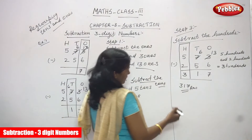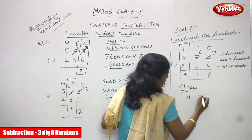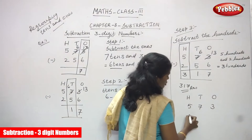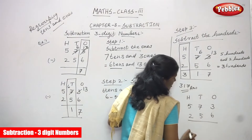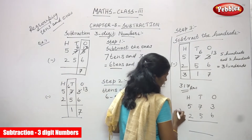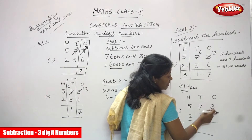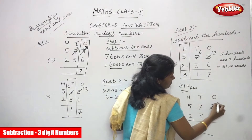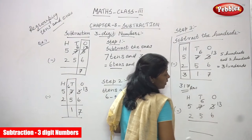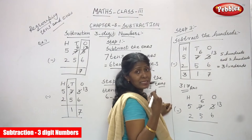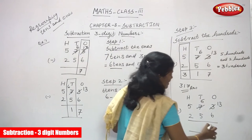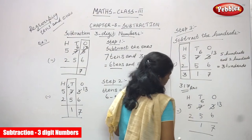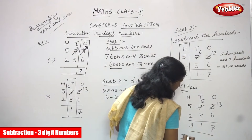Now I am going to do the normal method — no regrouping steps, just write HTU: hundreds, tens, ones. The numbers are 573 and 256. Subtracting 256 from 573 — start with ones: 3 ones and 6 ones, not enough to subtract, so borrow from tens. This 3 becomes 13, this 7 becomes 6. 13 minus 6: counting after 6 — 7, 8, 9, 10, 11, 12, 13 — write 7. Then 6 tens minus 5 tens is 1. Then 5 hundreds minus 2 hundreds: 3, 4, 5 — the answer is 3. You get the same answer: 317.